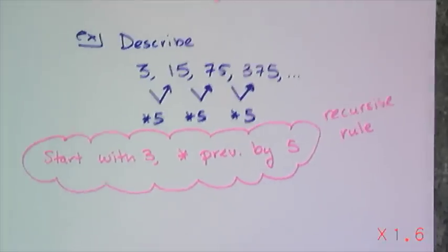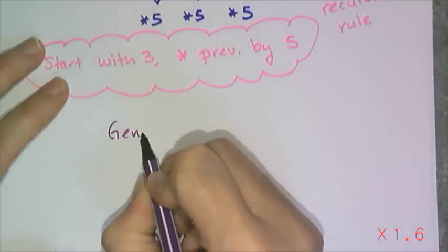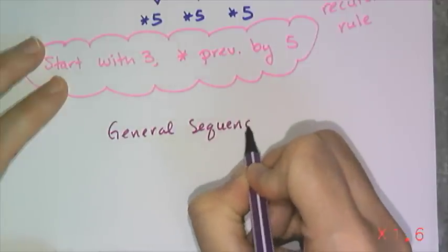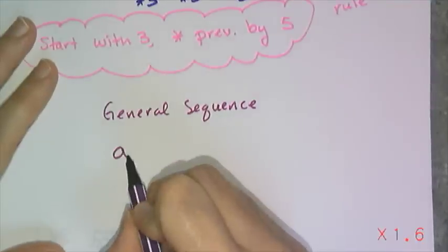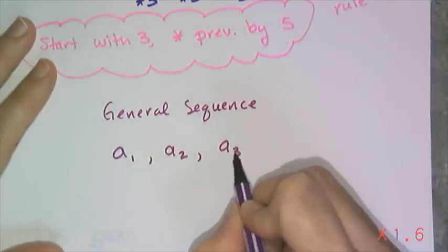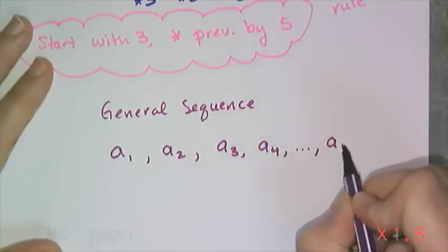And sequence notation looks like this. So any general sequence, meaning some generic sequence, can be defined in sequence notation like this: a sub 1, a sub 2, a sub 3, a sub 4, dot dot dot, a sub n.